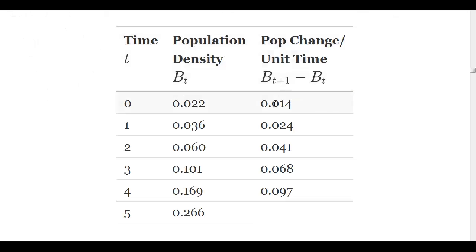Here's a chart where, first of all, we've renamed time, not in minutes anymore, but in time steps 0 through 5. And we've calculated the change in the population in each of these time units.